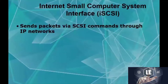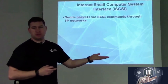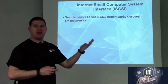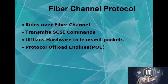iSCSI (Internet Small Computer System Interface) is another way of sending information in a SAN environment. It sends packets via SCSI commands. SCSI connectors — like an HBA — connect servers to storage devices, and iSCSI is the protocol that enables that communication from the server to the storage network. Fiber Channel Protocol (FCP) sends packets over long distances when the storage device is not in the same building, transmitting SCSI commands and utilizing hardware to send those packets out over fiber channel.